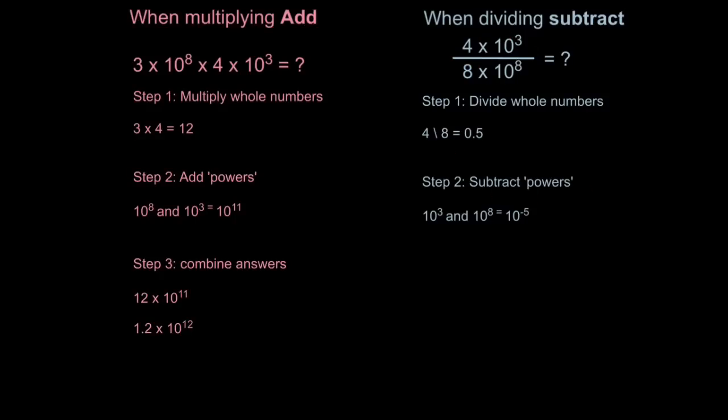Step 2. Subtract the powers. So 10 to the power of 3 subtract 10 to the power of 8 will be 10 to the power of minus 5. 3 take away 8 is minus 5. That's totally fine to do. Do not worry that you're going into the negative.